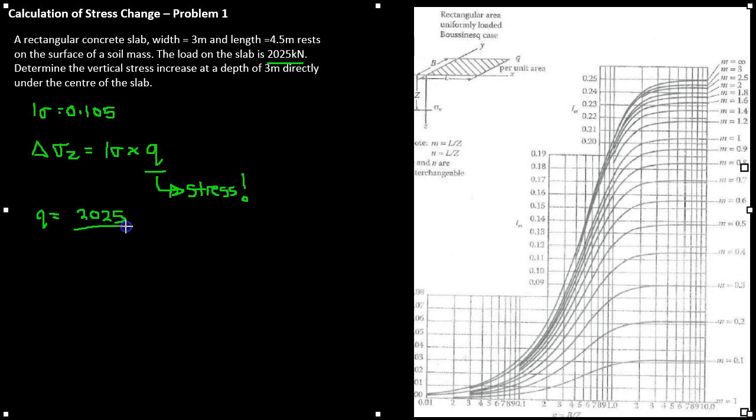To do this, Q is equal to 2,025 divided by our area, so 3 times 4.5. That equals a value of 150 kilonewtons per meter squared, or KPA, whichever you prefer.